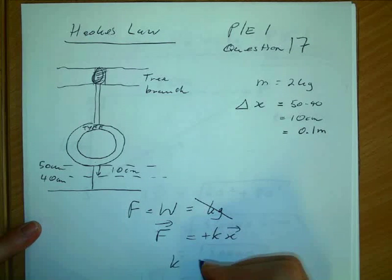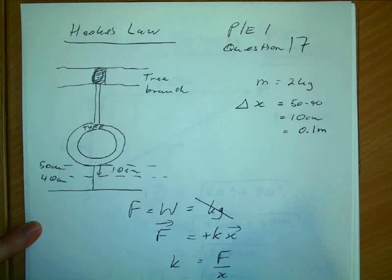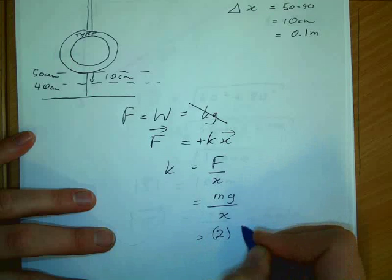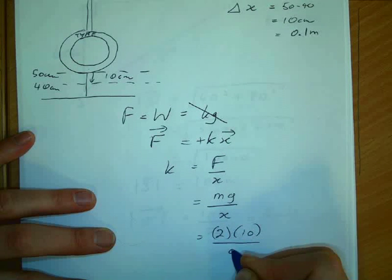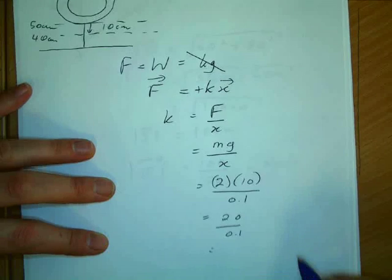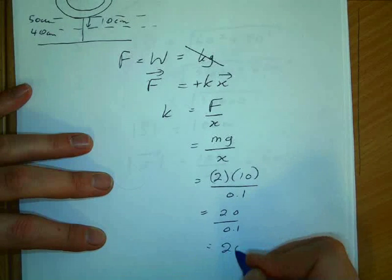The mass is 2, we'll take g to be 10, the extension is 0.1. So 20 divided by 0.1, which is 200.